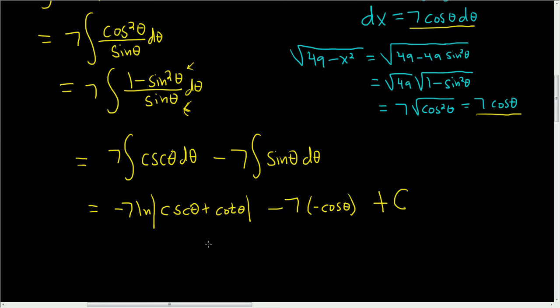Let's go ahead and clean this up a little bit more. This is negative 7 natural log of cosecant of theta plus cotangent of theta. And then we have the plus 7 cosine theta plus c.